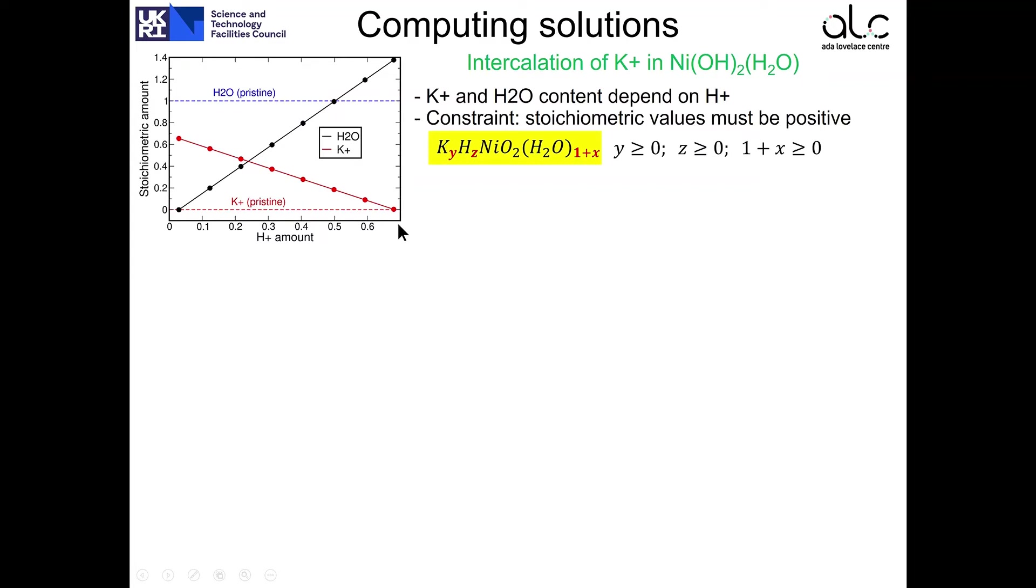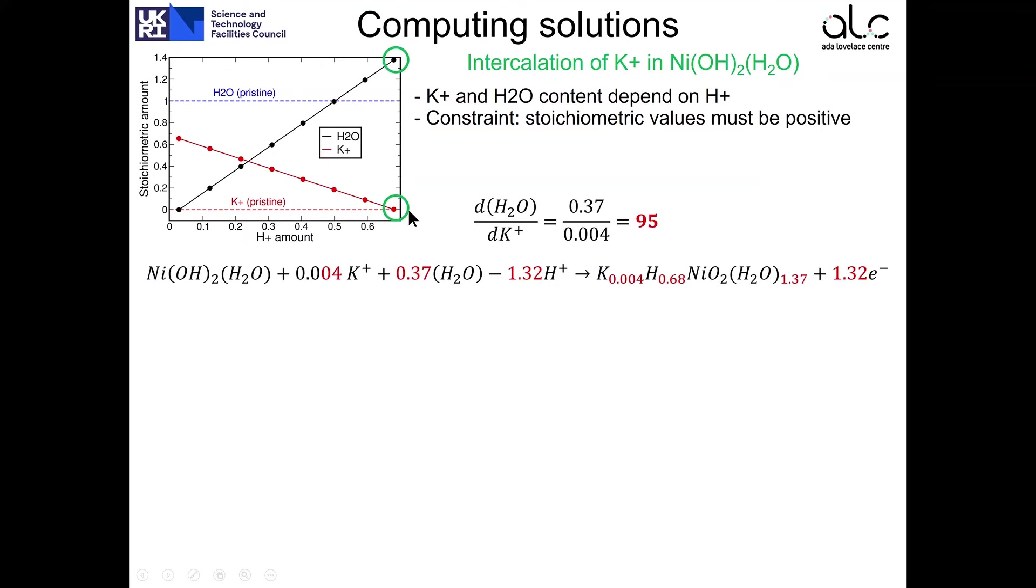So let's analyze some solutions amongst this set. This solution, for example, has got a very little amount of potassium, 0.68 protons and 1.37 water molecules. The reaction that leads to this stoichiometry is shown here, and when we analyze the amount of water and potassium involved and we take the ratio, we find 95. This means that the intercalation of every potassium happens also with the intercalation of 95 water molecules. So this solution, even though it is a possible solution of the charge and mass balance equation, seems to be a bit unrealistic.